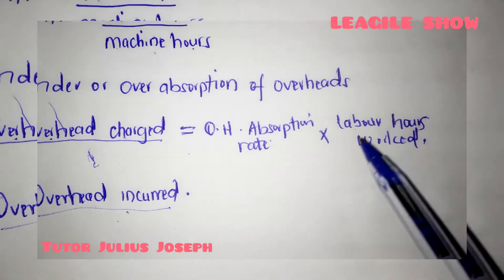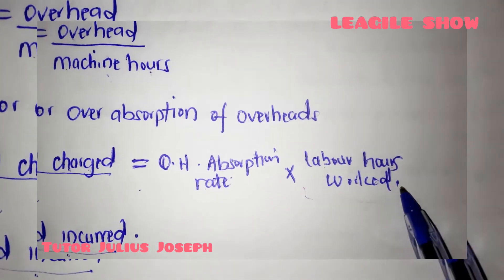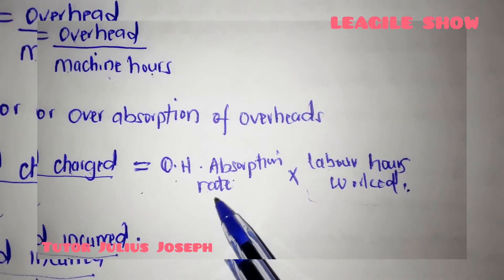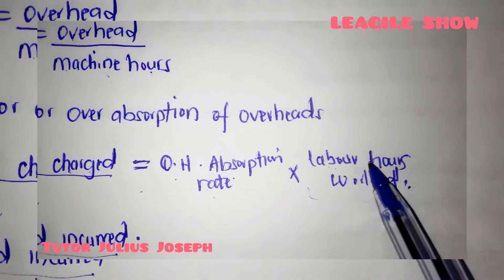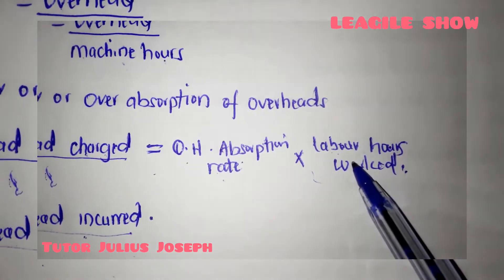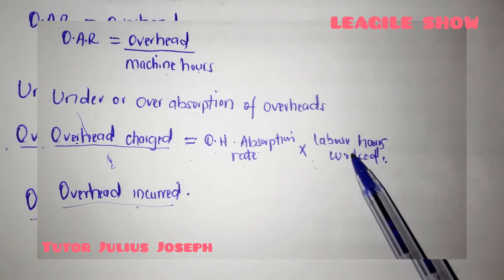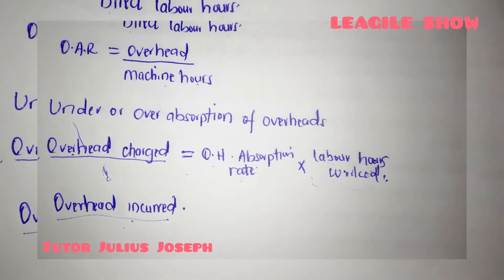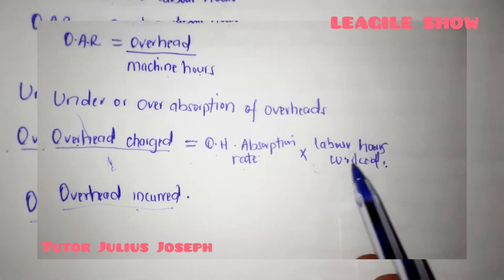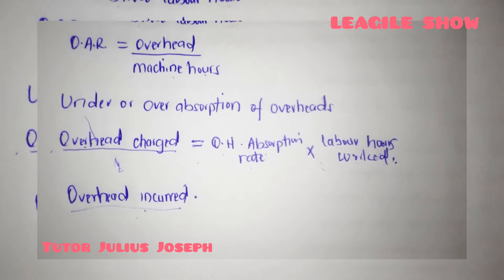Remember, the same formula applies when using machine hours. The only thing that changes is that you use the overhead absorption rate times the machine hours, if the question requires machine hours instead of labor hours.